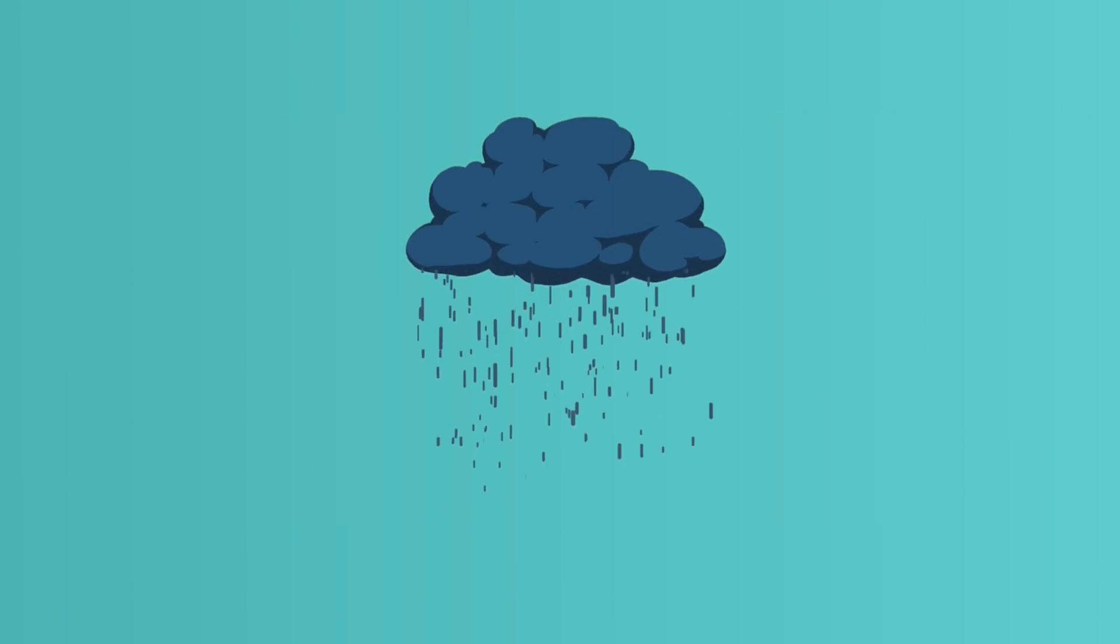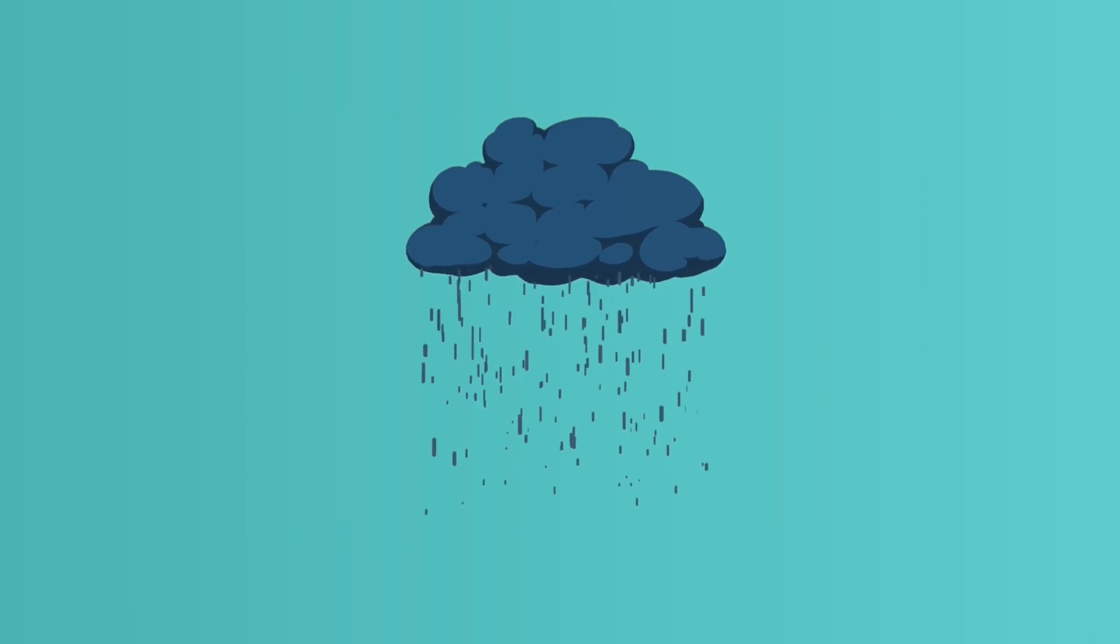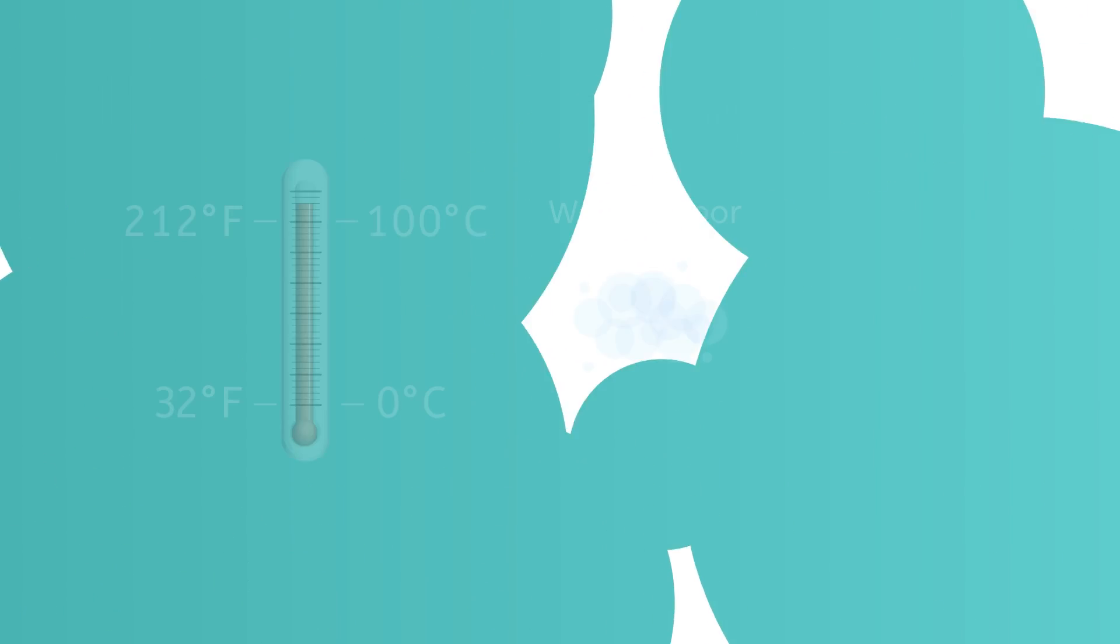Just like ice, water vapor can also transition back into liquid water. When water vapor cools down below 212 degrees Fahrenheit, it becomes liquid again, a process known as condensation.